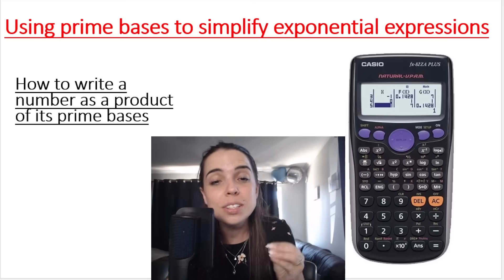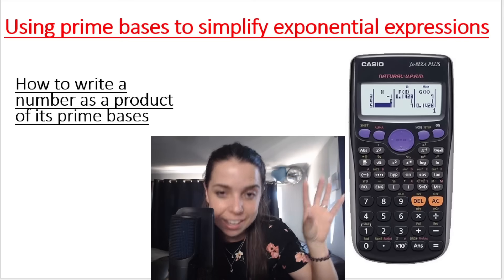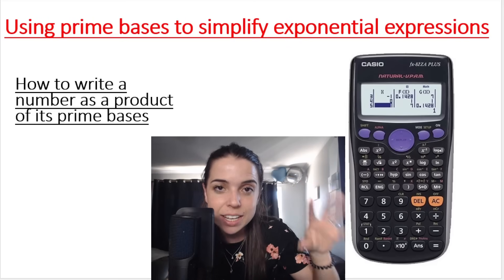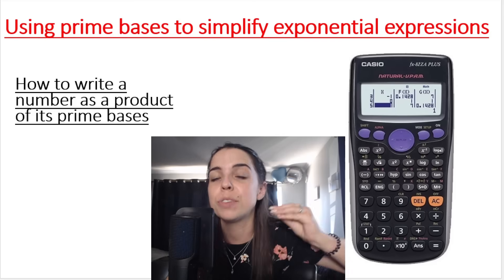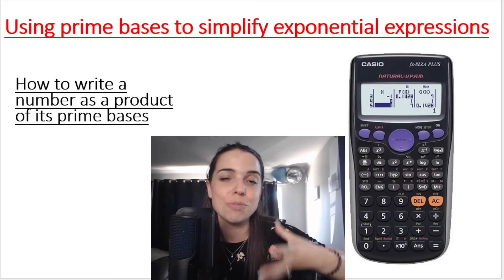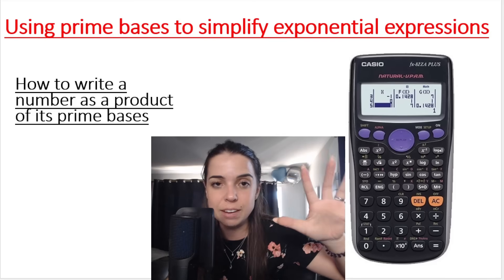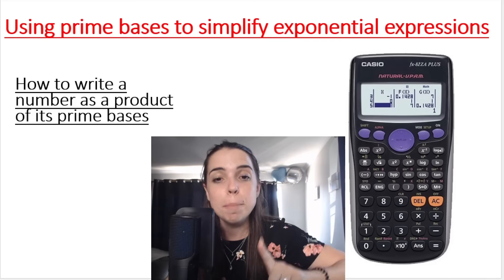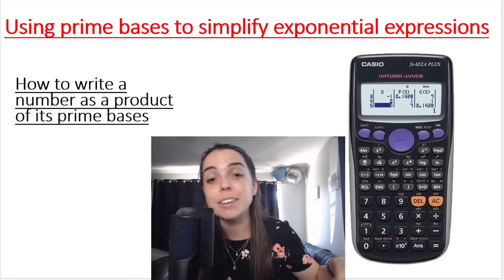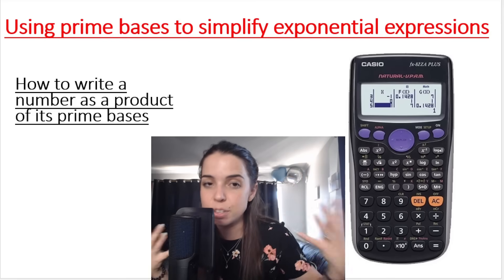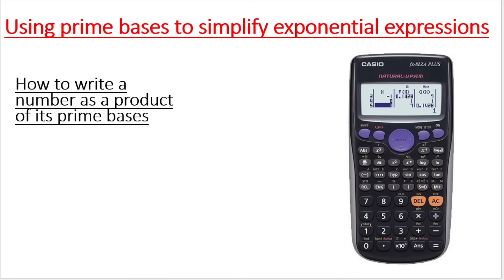For this, I want you to grab your calculator. Hopefully you have a Casio calculator. There's a way to do this without a calculator — we use a factor tree or a factor ladder, which I do go through in my grade eight videos. But we are allowed to use a calculator if we're in grade 10, 11, 12, and so on. This is how we do it.